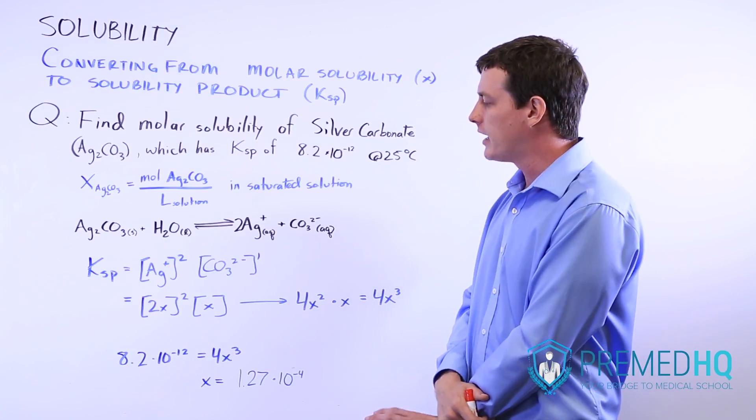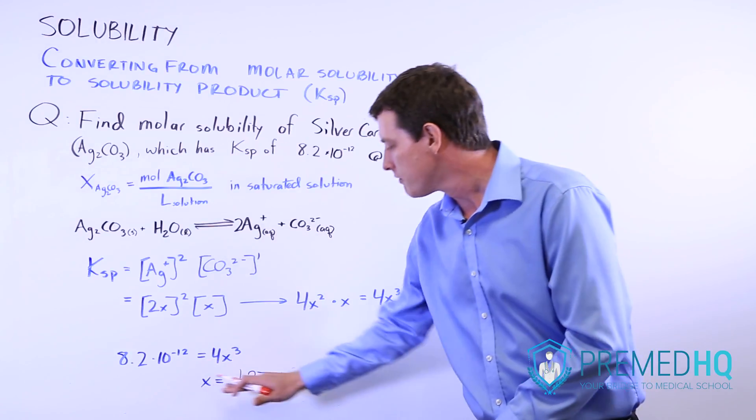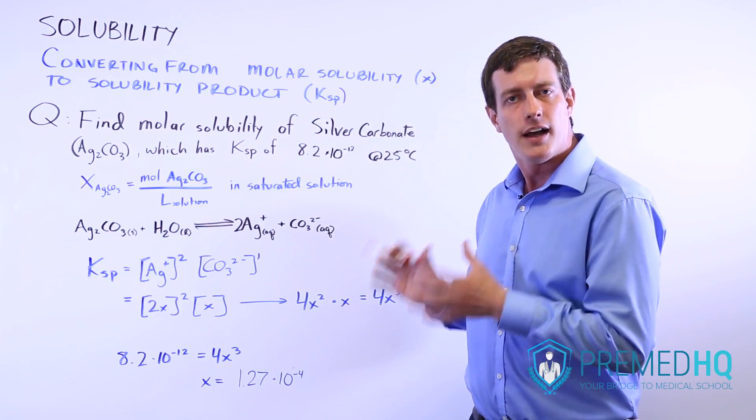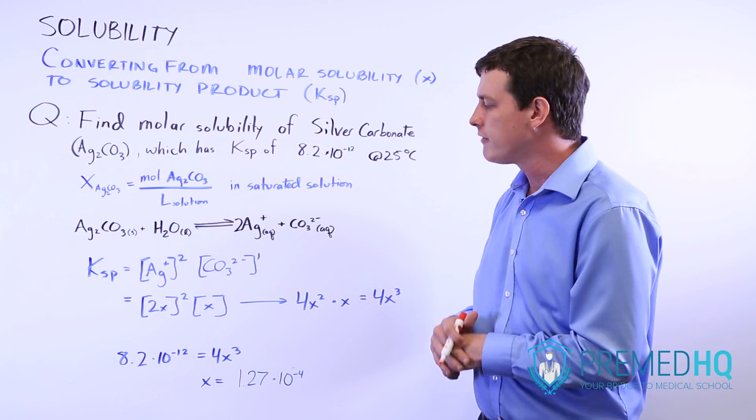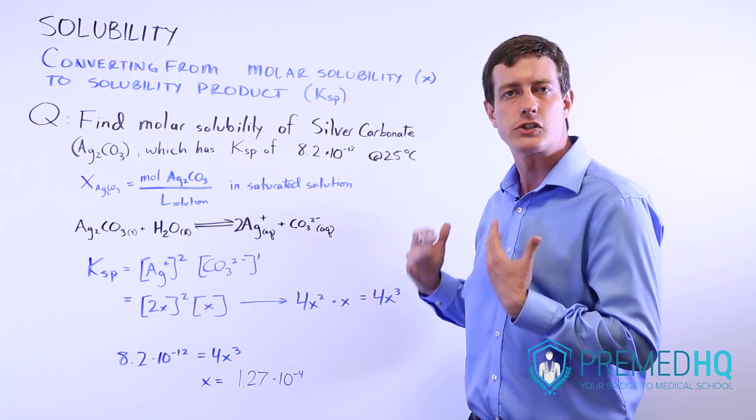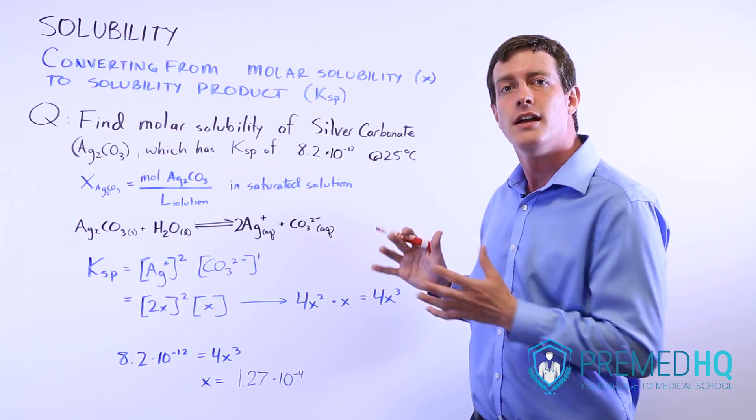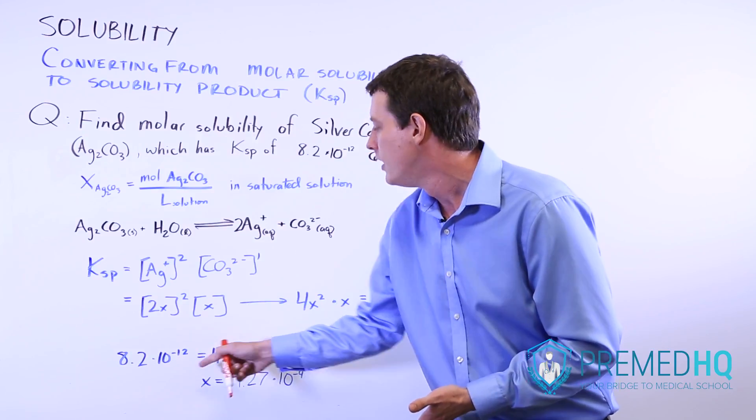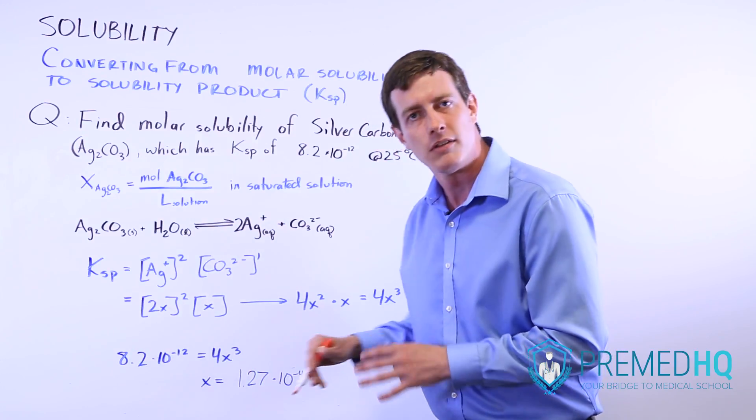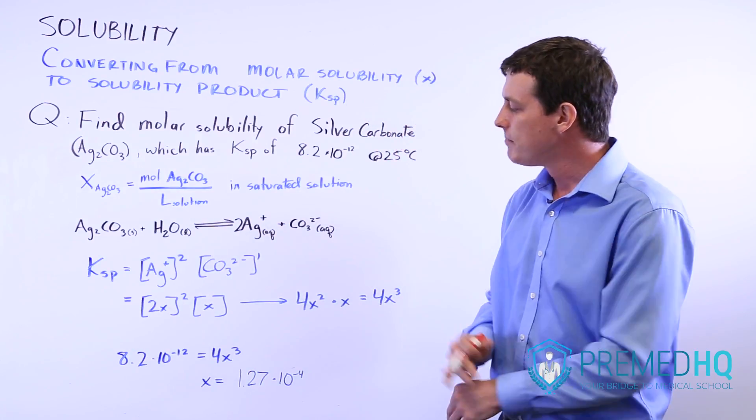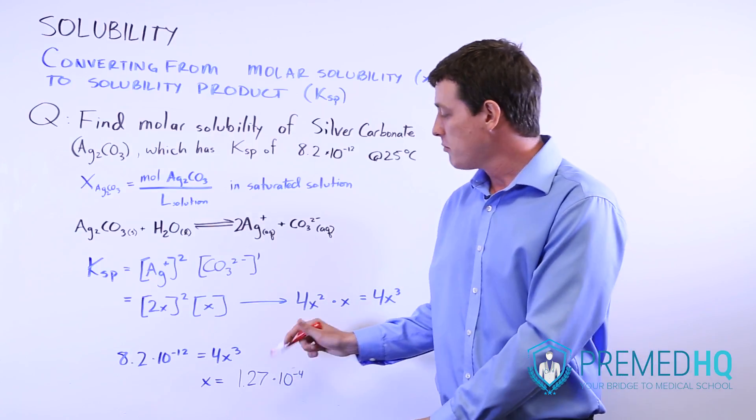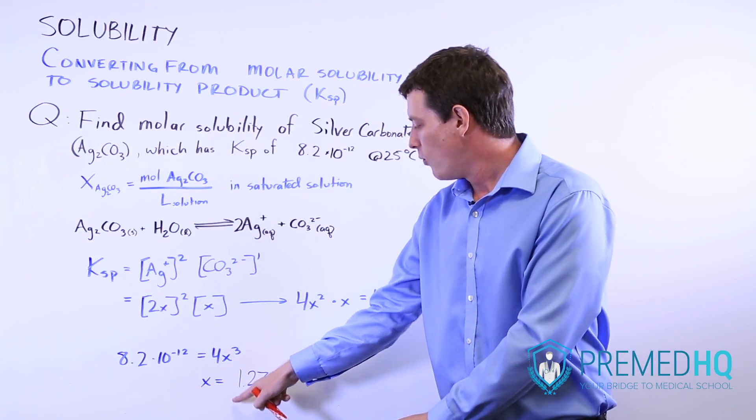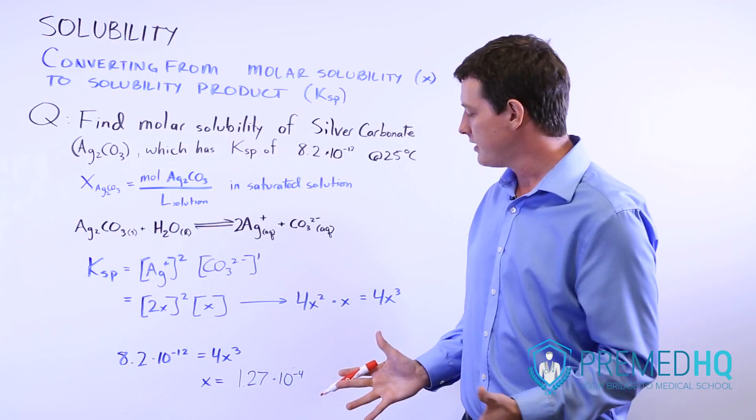If you're doing this on the MCAT, they probably won't make you solve for this because you don't have a calculator available at your disposal. If you're doing this in a general chemistry class or some exam where you do have a calculator, then you'll have to do the algebra and solve for this. You'll just divide that by 4, and then you'll take the cube root of whatever that product is. But ultimately what you'll end up with is that X = 1.27 × 10^-4, and X is the molar solubility.